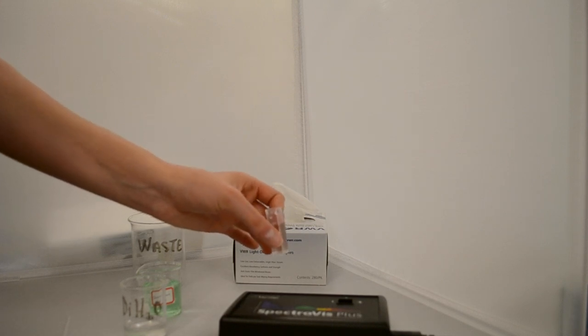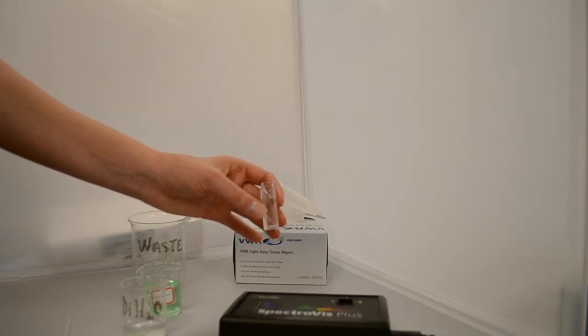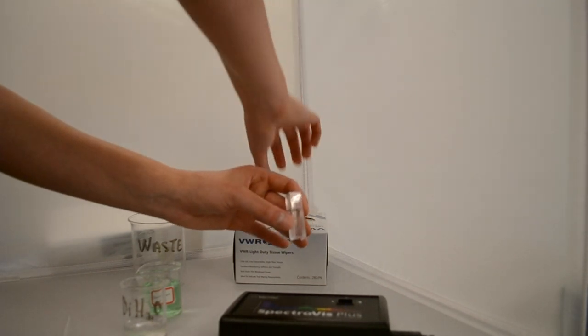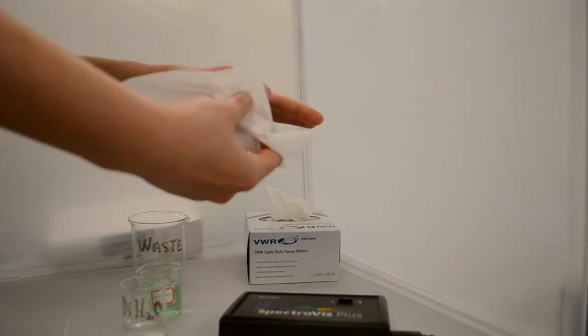In this case, we are trying to measure the concentration of food dye in the water, so we will be using water as our blank. Use a Kim wipe to wipe off the outside of the cuvette.